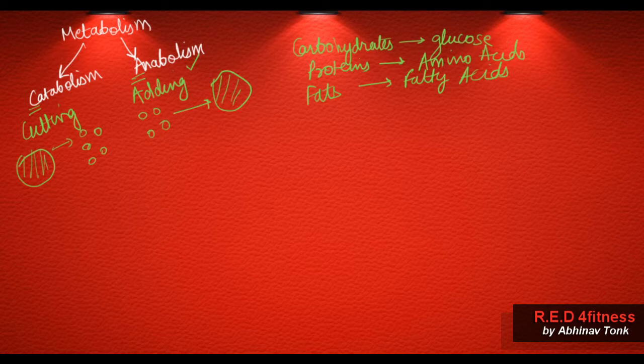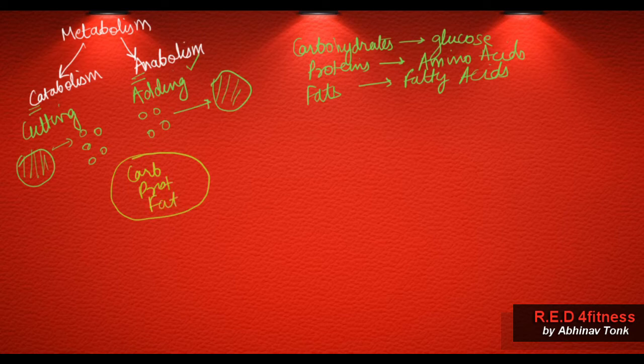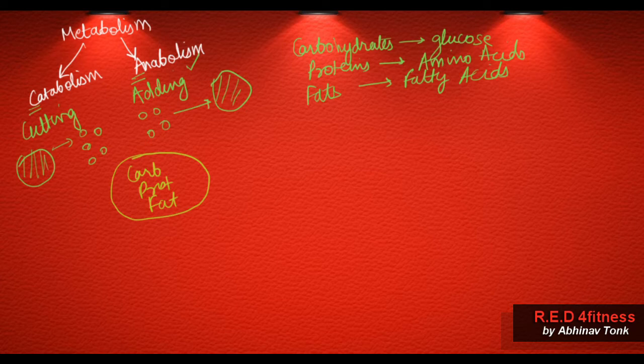The food we eat contains these macronutrients — carbs, protein, and fat — but the carbs, fat, and protein present in food might not be in the configuration that our body wants. So first these are broken down into their component level, and then those components build up to form the macronutrients which are required in the right configuration in our body.